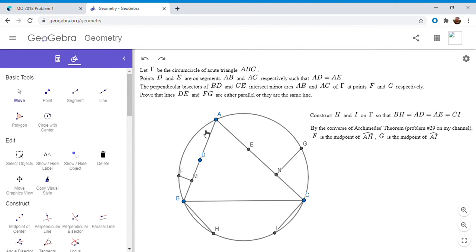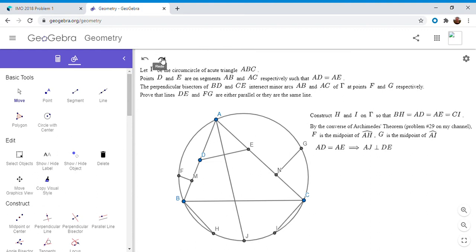First, I'm going to let J be the midpoint of arc BC. Obviously the midpoint of arc BC lies on the angle bisector of angle BAC. So J is the midpoint of arc BC, and therefore since arcs BJ and JC are equal, angle BAJ equals angle CAJ. So it's an angle bisector. And not only that, since AD is equal to AE and AJ is an angle bisector, we have to have AJ is perpendicular to DE.